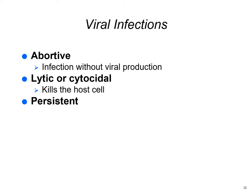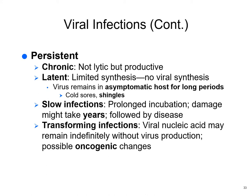Viral infections come in several types. Abortive: the virus gets into cells but doesn't produce new viruses — nothing happens. Lytic or cytocidal: it kills the host cell. Persistent infection: the virus sits in the cell and causes ongoing damage. Persistent infections can be chronic — not lytic but producing new virus that will eventually return — or latent, with limited or no viral synthesis, where the virus may be asymptomatic in the host for years.